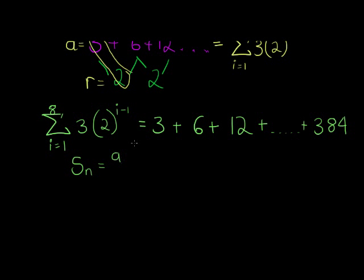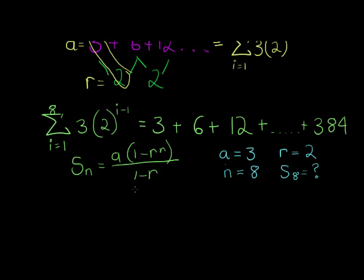This was the formula that we showed in the previous video, and it will be very good if you can recall it from memory, so go and learn it off by heart. a is my first term 3, r is my constant ratio 2, and n is the number of terms 8, and s_8 is still unknown. That's what we are going to calculate.